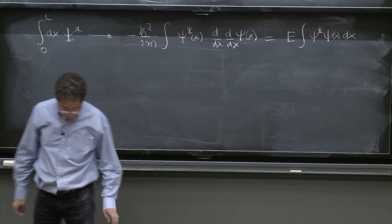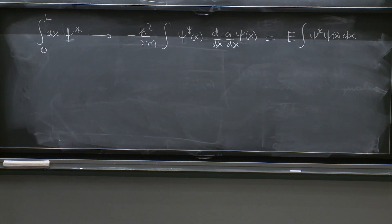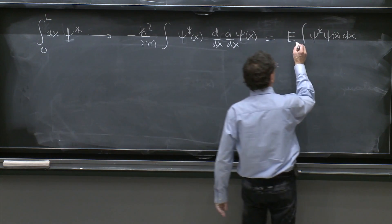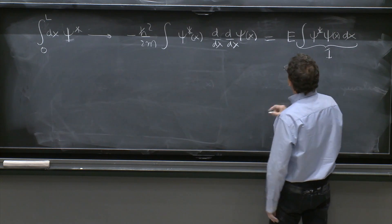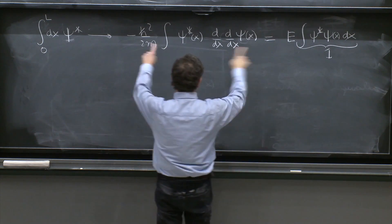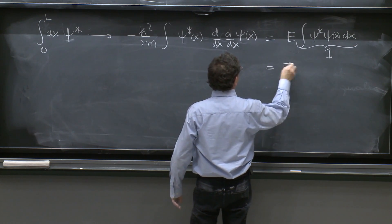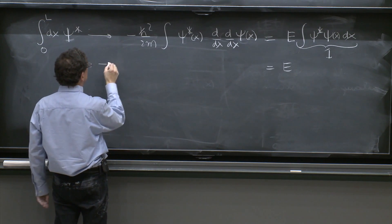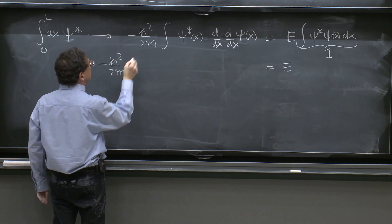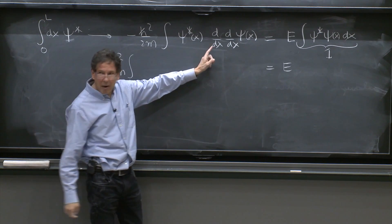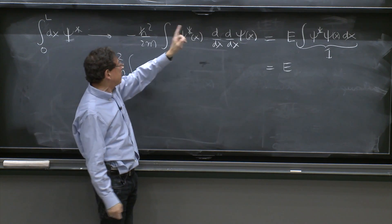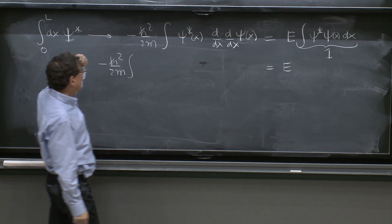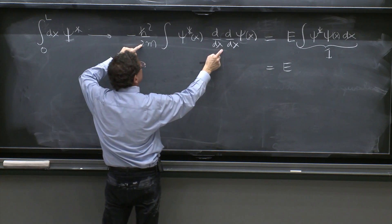And we will assume, of course, that you have things that are well normalized, at least. So if this is well normalized, this is 1. So this is the energy is equal to this quantity. And look at this quantity. This is minus ℏ squared over 2m. I could integrate by parts.